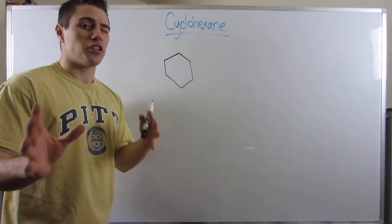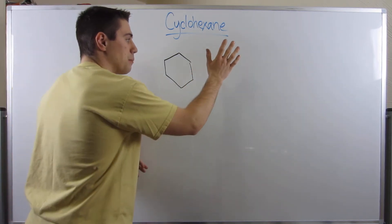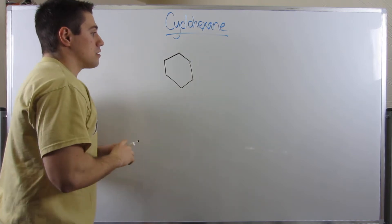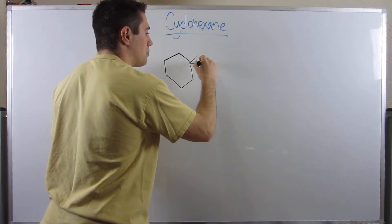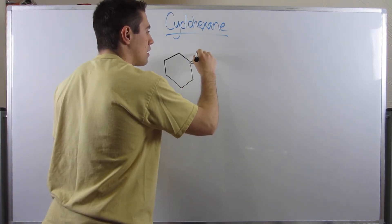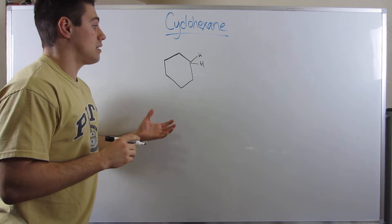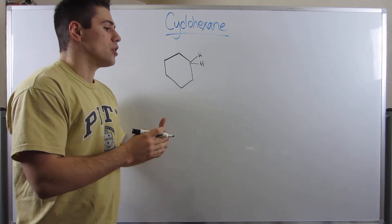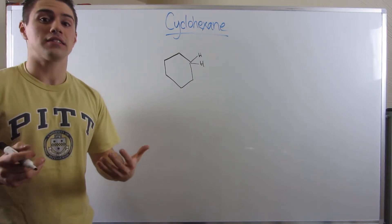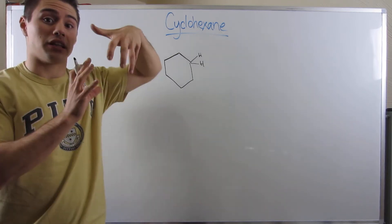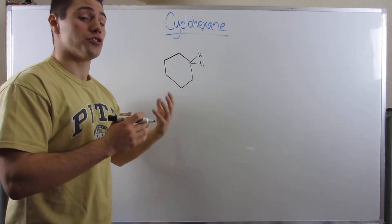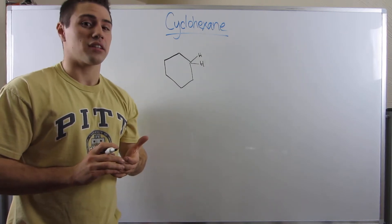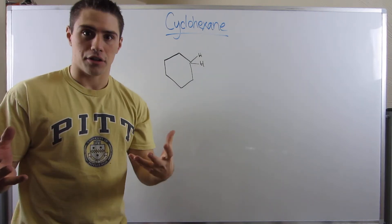The bond-line way we draw cyclohexane is just flat in the plane of the board — completely flat. There are two hydrogens at every position, but in reality this is not how cyclohexane is arranged. We need to draw it in a different way that gives us more insight as to how it's spatially aligned. To do that, we draw what's called the chair conformation.